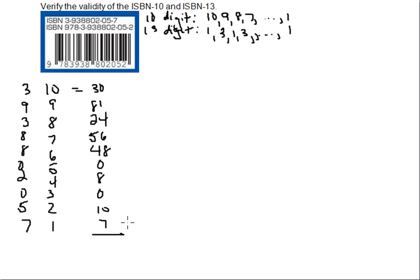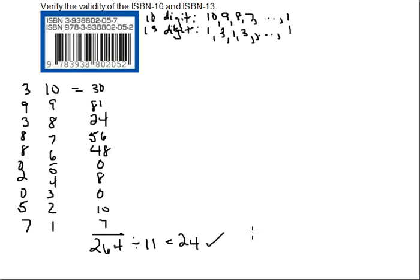Adding these together using my calculator, we have 264. What we're looking for is that this number is divisible by 11. When I divide it by 11, I get 24 with no remainder, so it is divisible by 11. The first ISBN is valid.